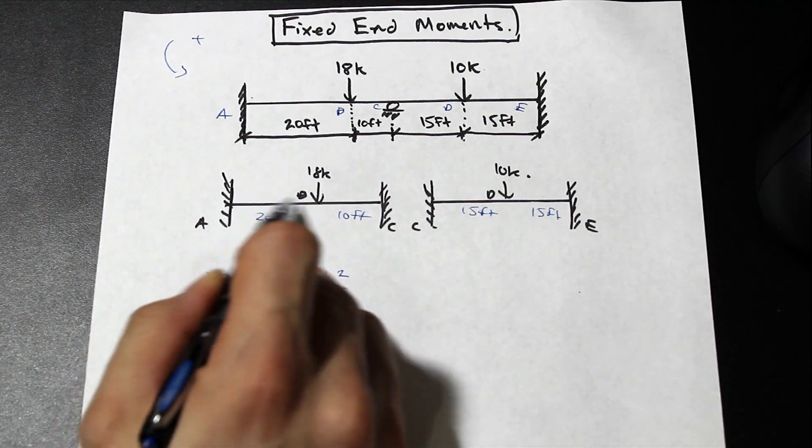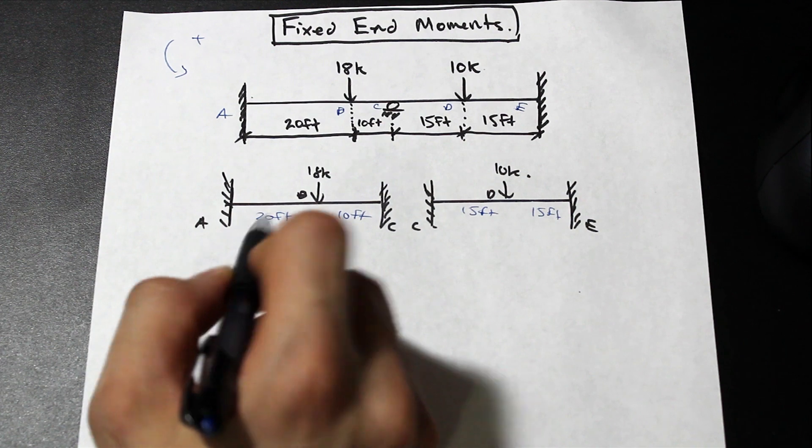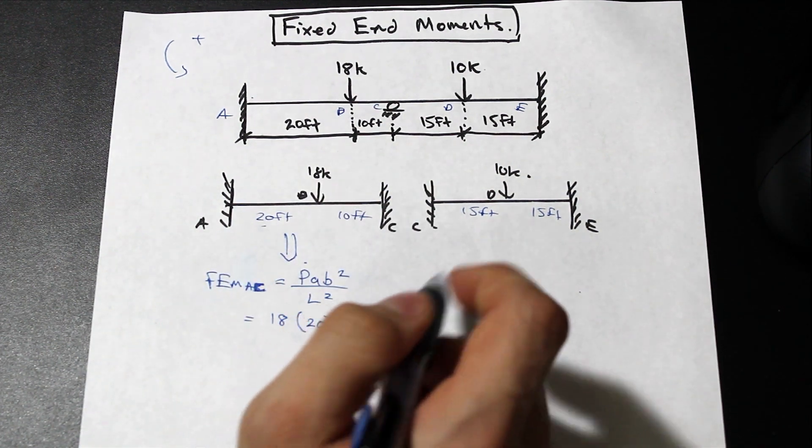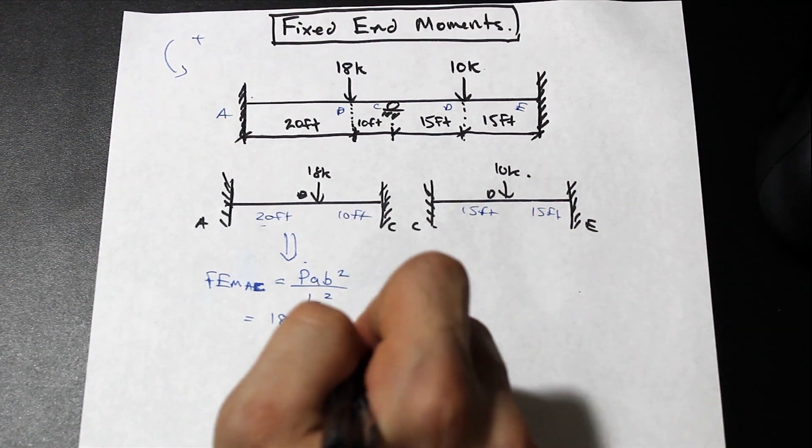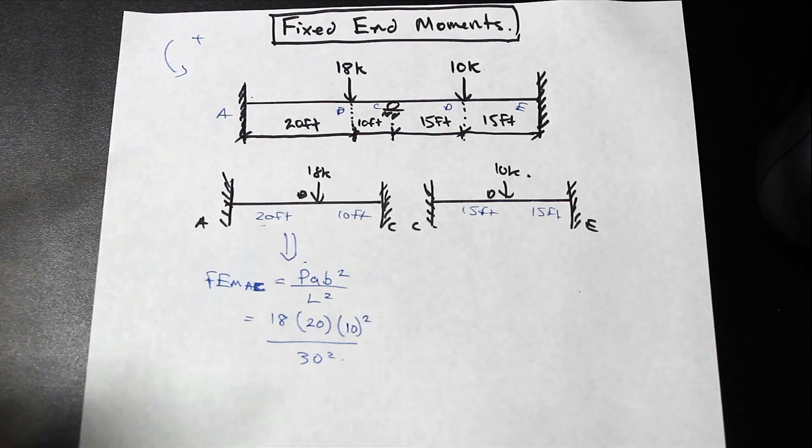All right, so that's going to be equal to P is 18, that's the load. a is the distance from the left portion of the support to the right, so that's going to be in this case 20. B is going to be 10, so I'm just following essentially what the table gave us, squared. And L is the total length which is 30 squared.